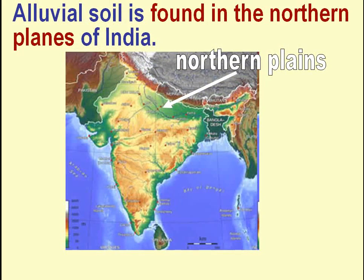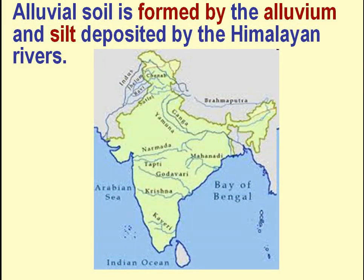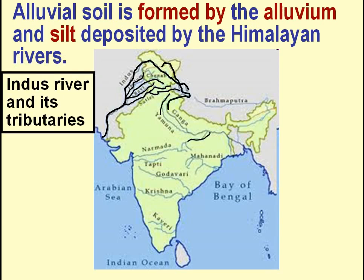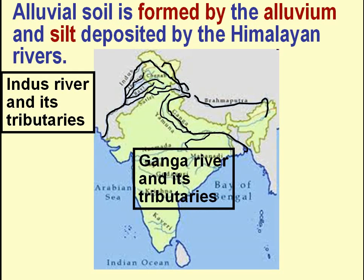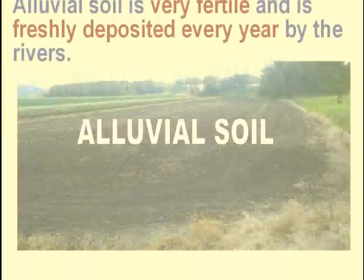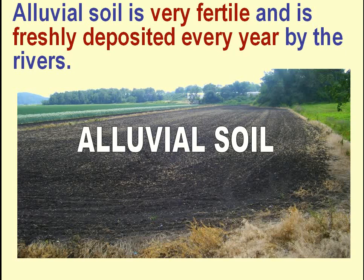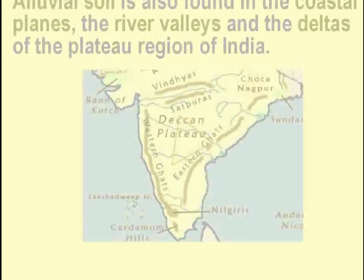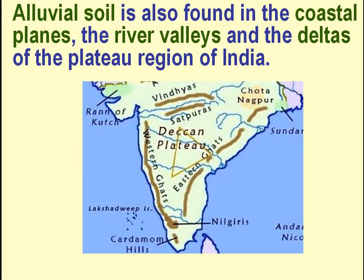Alluvial soil is found in the northern plains of India. It is formed by the alluvium and silt deposited by the Himalayan rivers. Alluvial soil is very fertile and is freshly deposited every year by the rivers. It is also found in the coastal plains, the river valleys and the deltas of the plateau region of India.